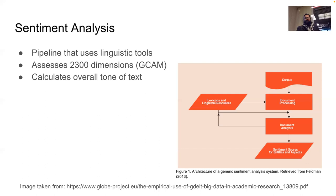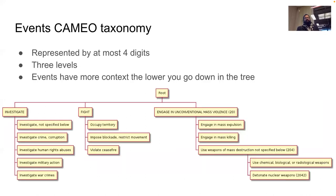The CAMEO taxonomy for events has three levels represented by at most four digits. The first one or two digits form the root, descending further from there. For example, you can have 'investigate,' 'fight,' or 'engage in unconventional mass violence' as three different branches. 'Fight' could branch into 'occupy territory,' 'impose blockades,' 'violate ceasefire,' and so on. 'Engage in unconventional mass violence' includes mass expulsion, mass killings, chemical weapons — essentially it's a tree structure.